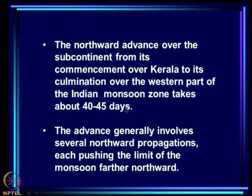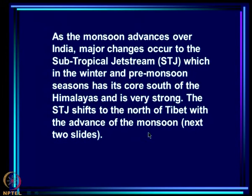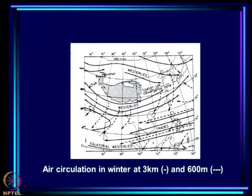We have already seen this when we looked at the satellite pictures of the cloud bands and how they propagate. As the monsoon advances over India, major changes occur in the subtropical jet stream, which in the winter and pre-monsoon seasons has its core to the south of the Himalayas and is very strong. This subtropical jet stream then shifts to the north.